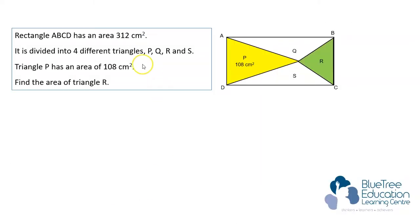Rectangle ABCD has an area of 312 cm². It is divided into 4 different triangles P, Q, R and S. Triangle P has an area of 108 cm². Find the area of triangle R.